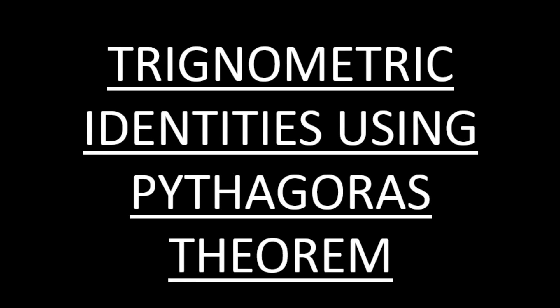Welcome back. In today's video, we will see the proof of the trigonometric identities using the Pythagoras theorem. So let us quickly revise the trigonometric ratios which we have done in the previous videos. The three ratios which we have done are sin theta, cos theta, and tan theta.